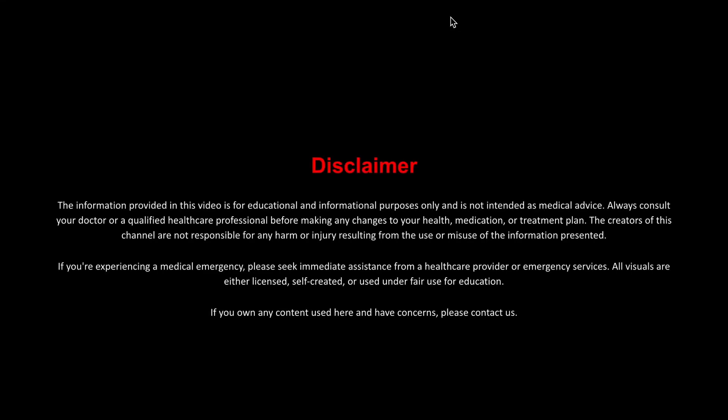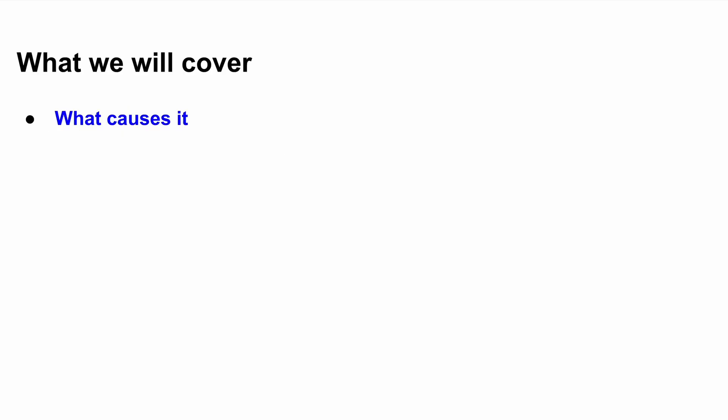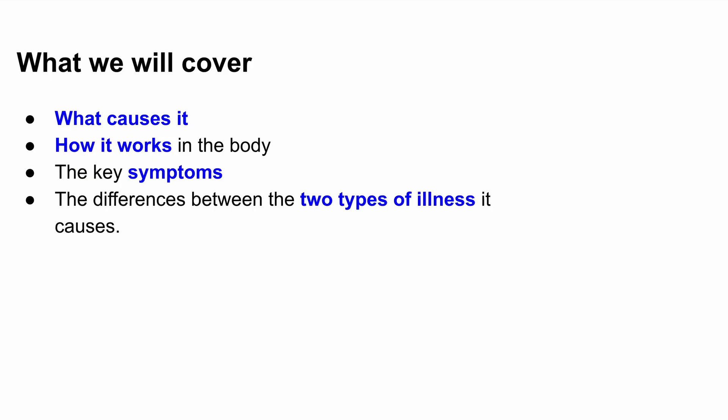Hi everyone. Welcome back to another lesson. In today's video, we're going to talk about a condition that sounds strange but is actually important to know for exams and clinical understanding: Reheated Rice Syndrome. This is one of those classic foodborne illnesses that shows up in both board questions and real-world cases. We'll cover what causes it, how it works in the body, the key symptoms, and the differences between the two types of illness it causes. Let's get started.